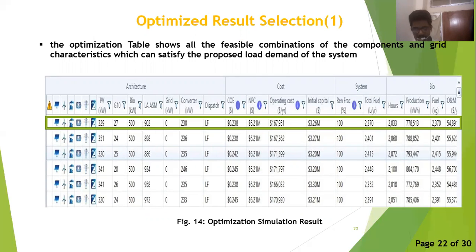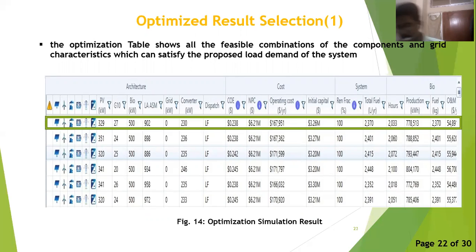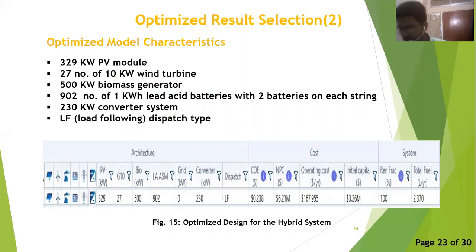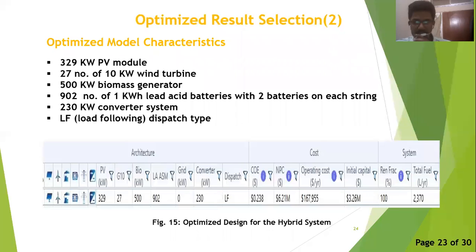Now that we know the resources and component characteristics used in the hybrid system, we can apply the simulation process using HOMER. HOMER evaluates all possible combinations of components to satisfy the load demand. All possible solutions are shown in the optimization table in figure 14, categorized based on the lowest net present cost. The chosen optimized result contains 329 kW PV array, 27 units of 10 kW wind turbines, a 500 kW biogas generator, 902 units of 1 kWh lead-acid batteries with two batteries per string, a 230 kW converter system, and a load-following dispatch type.